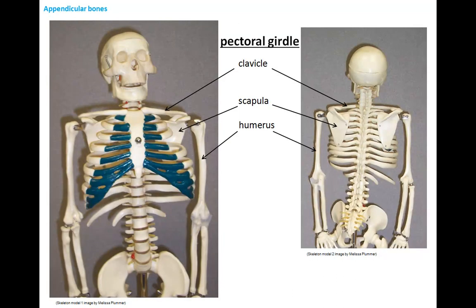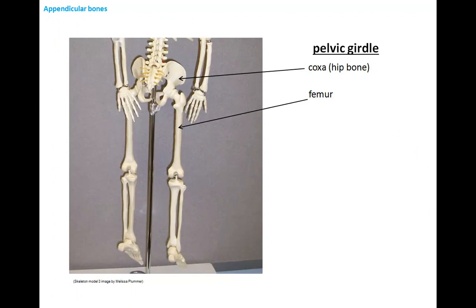Identified here are appendicular skeletal bones. The pectoral girdle is comprised of the clavicle, the scapula, and the upper arm bone, the humerus. Identified here is the pelvic girdle, made up of the coccyx, your hip bone, and the upper leg bone, the femur.